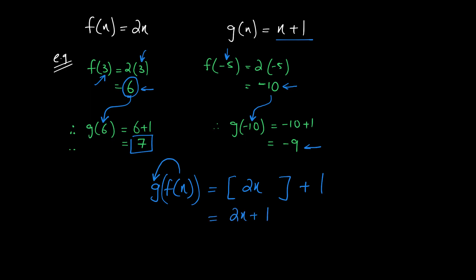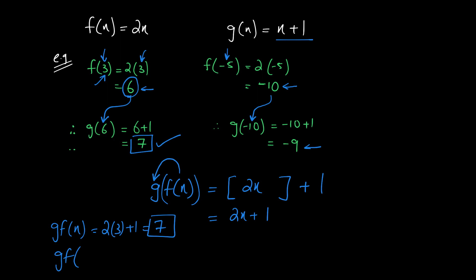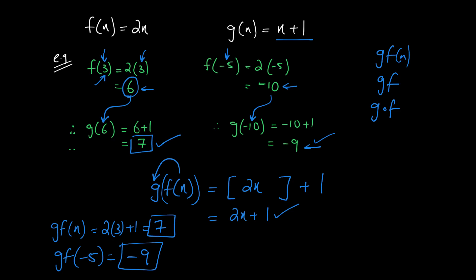We know function g is x + 1. If we insert function f as the input to g, the new composite function comes out to be 2x + 1. When I insert x = 3, I get 7, and when I insert x = -5, I get -5 × 2 + 1 = -9 — the same outputs as before. Such functions are known as combined or composite functions and can be written as g∘f(x), g∘f, or g∘f (g not f).